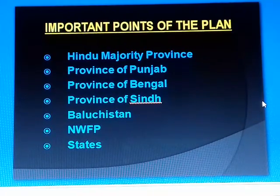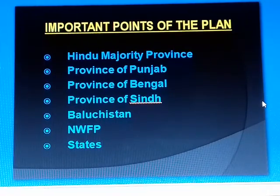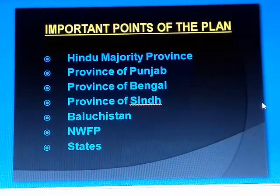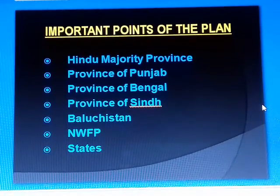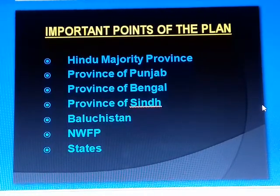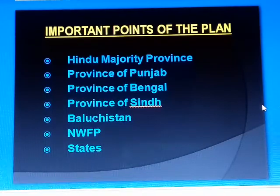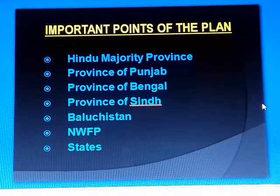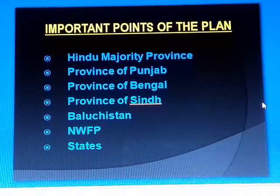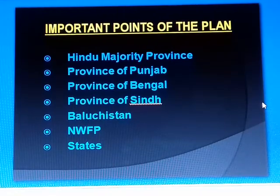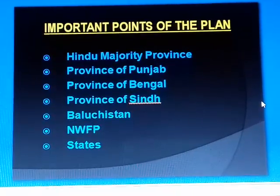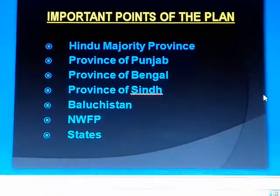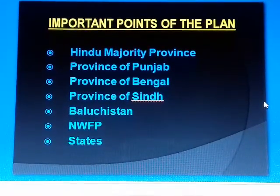Third point is the province of Bengal. The principle approved for Punjab was also approved for Bengal. The province was to be divided into East Bengal and West Bengal. Regarding the province of Sindh, the members of the Sindh provincial assembly got the right to join Pakistan or Bharat by a majority vote.